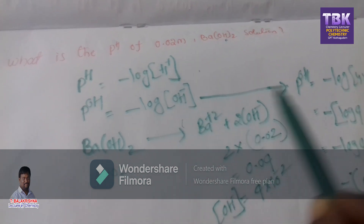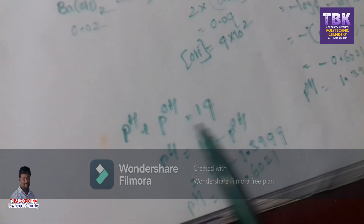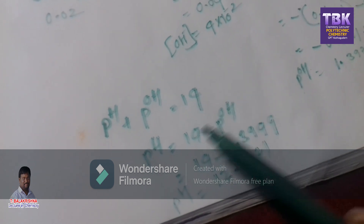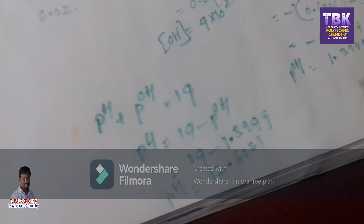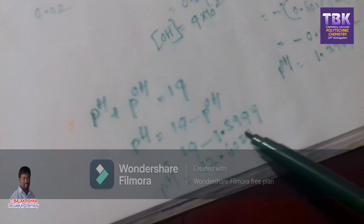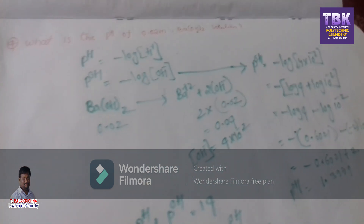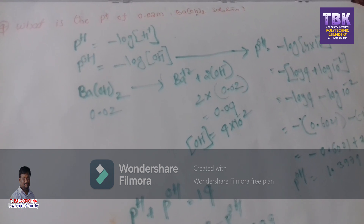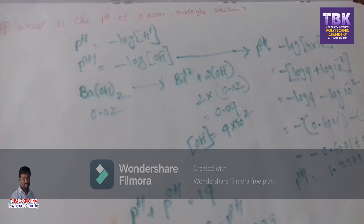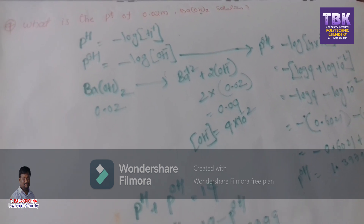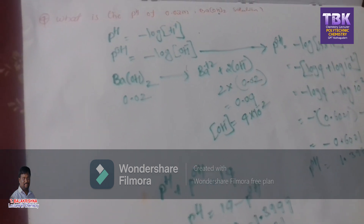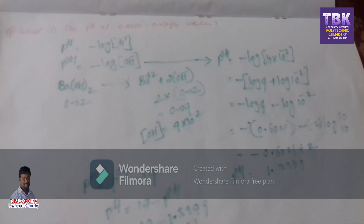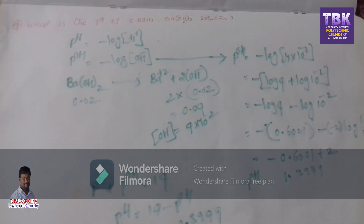For problems involving bases like sodium hydroxide or barium hydroxide, it is easy to use the formula log(A × B) and the formula log aᵐ = m·log a. Remember log 10 base 10 = 1, log 1 = 0. For log 2, log 4, and others, use the logarithm table. Thank you students. This is T. Balakrishna, chemistry lecture, GPT. Thank you.